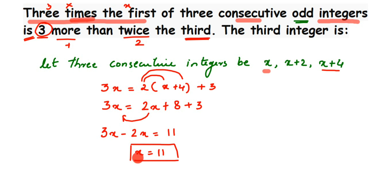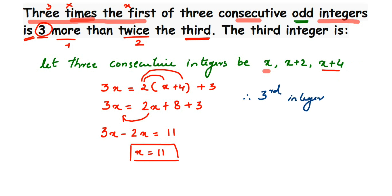The first number x is 11. They are asking for the third integer, which is x plus 4. Substituting: 11 plus 4 equals 15. So the third integer is 15. If you also want the second integer, it's x plus 2, which is 11 plus 2 equals 13. I hope this question is clear — if you have any doubt, drop a comment. Thank you for watching!